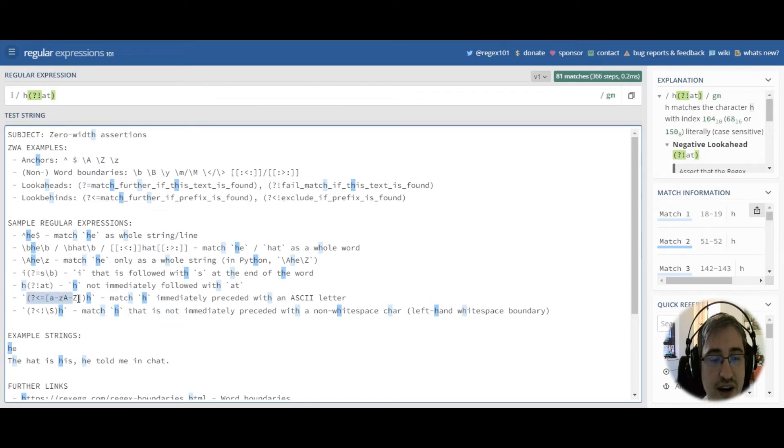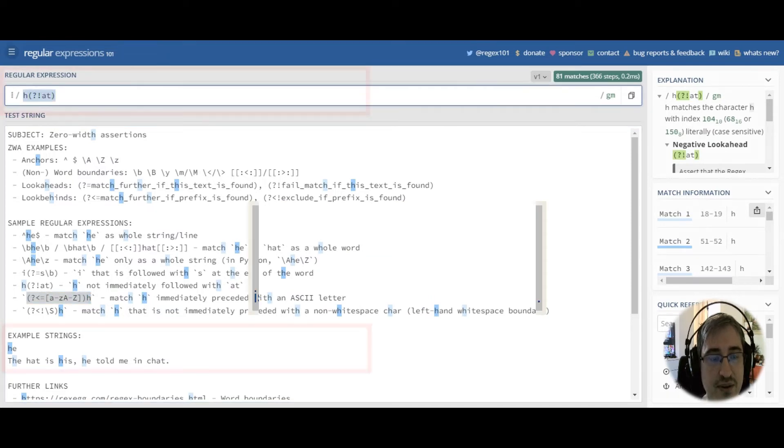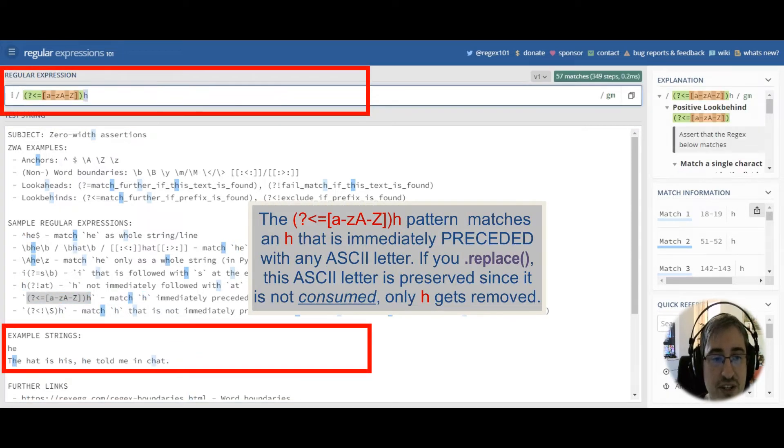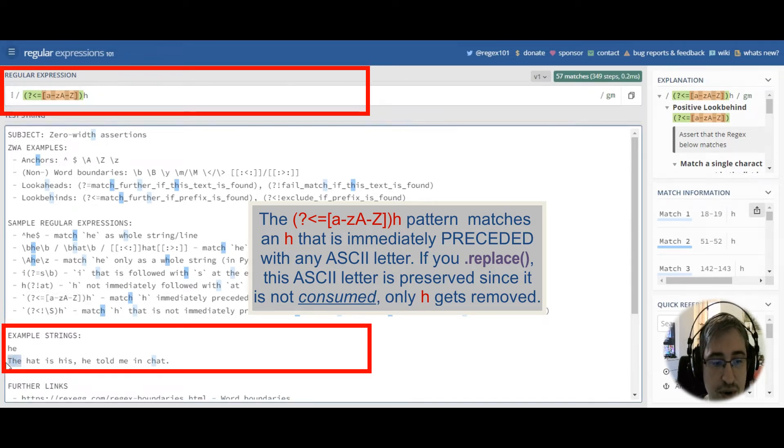Now let's see how positive look-behinds work. For example, this pattern matches any h that is preceded, immediately preceded with any ASCII letter. So, it matches in the word the, but it's not matched in the word hat, because it's immediately preceded with a white space.